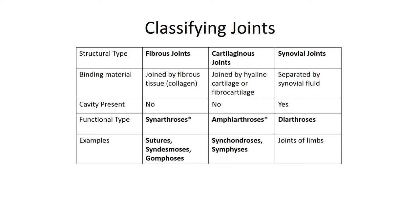Joints can also be classified based on their structure. The structural classification of a joint is based on the anatomical components that make up a joint. There are three main categories: fibrous joints, cartilaginous joints, and synovial joints. Fibrous joints are held together by fibrous connective tissue but lack cartilage and possess no cavity between the bones. Fibrous joints are either synarthrotic or amphiarthrotic.